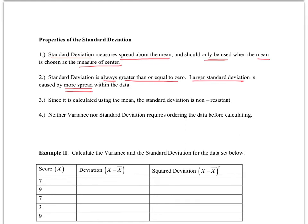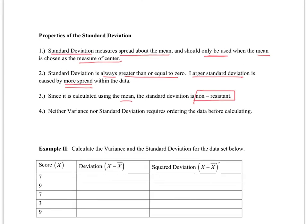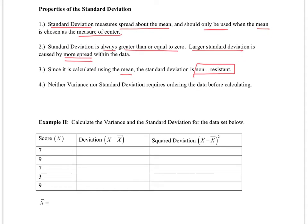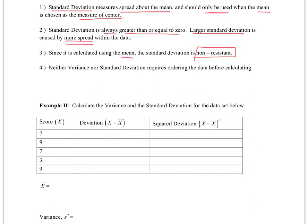Since it's calculated using the mean, the standard deviation is non-resistant. If the mean is not considered valid or a good measure of center, then the standard deviation is not going to be helpful. Lastly, neither variance nor standard deviation requires ordering the data. A lot of times we have already ordered the data to find the median, but if the median is not necessary, then we do not have to order the data.